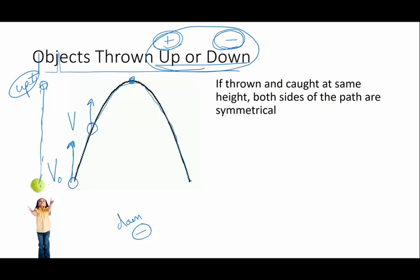At the tippy tippy top of the path what's the velocity at the top? Zero. It has to go to zero before it can turn around and come back down again.